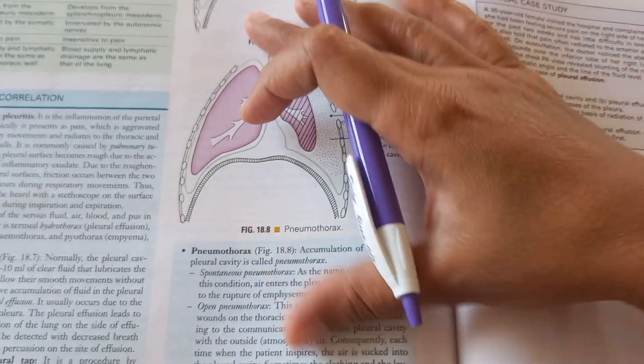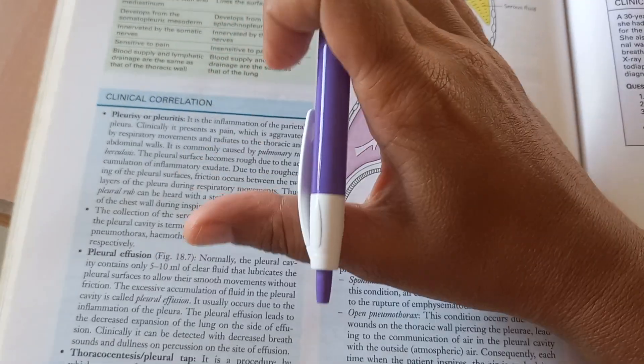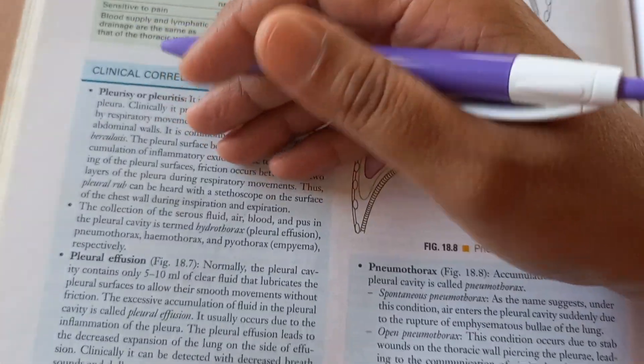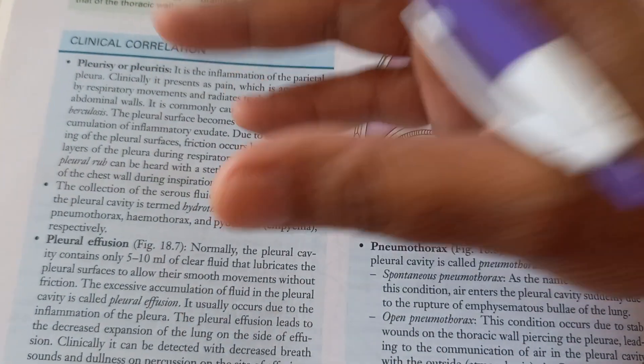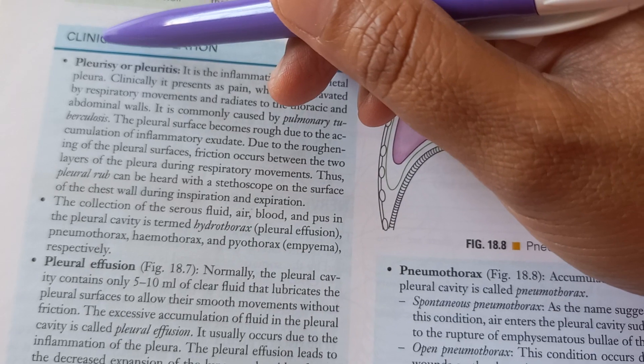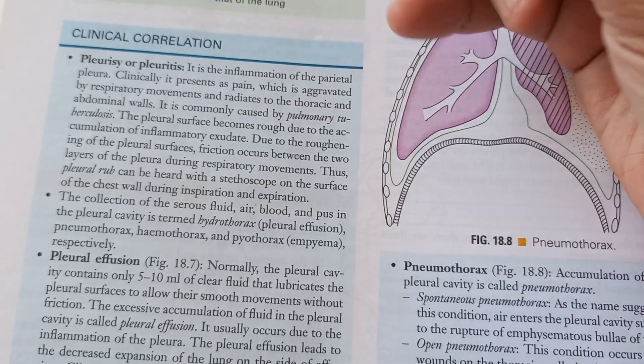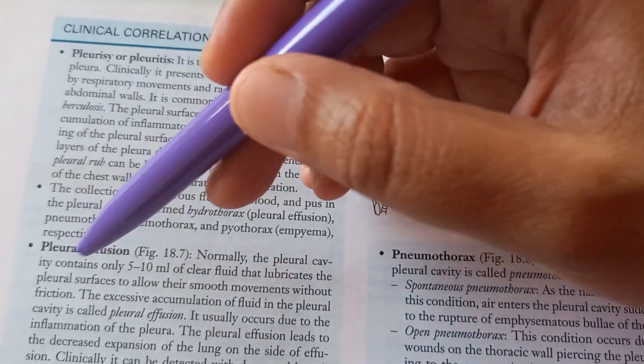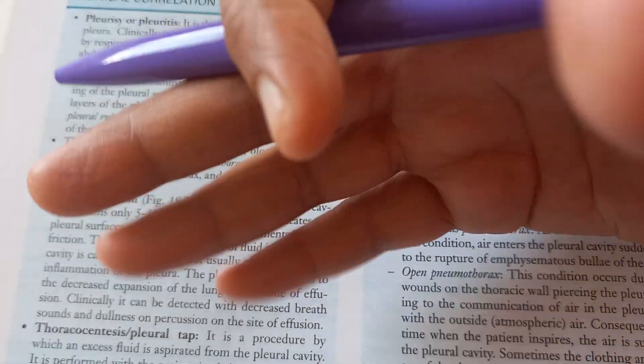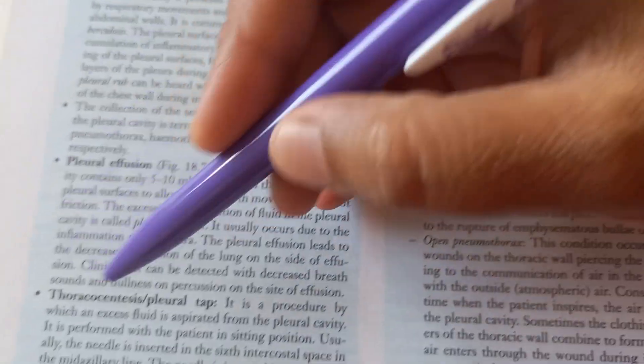So at the end of every chapter, they have given the clinical, I mean, at the end of every topic, they have given the clinical correlation. Very important to know why you are reading it. What are the important clinical problems that you come across? So you have the pleuritis, the inflammation of the parietal pleura, pleural effusion. You should know how an x-ray looks in pleural effusion and even clinical signs, you should know.